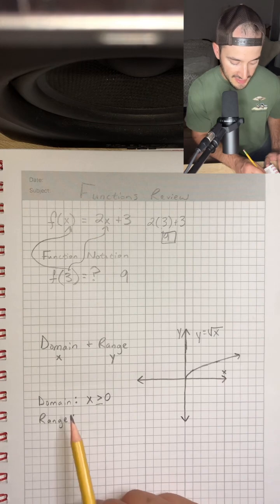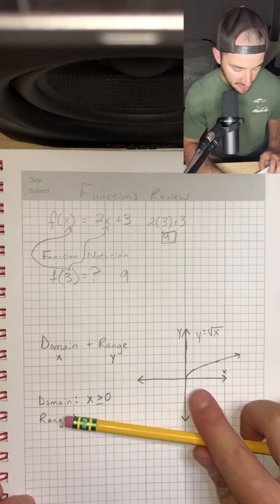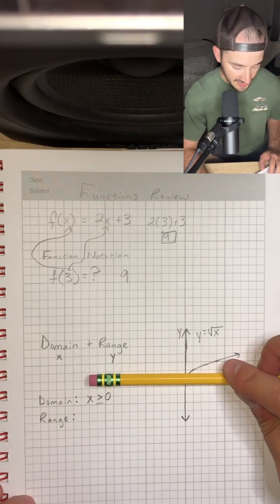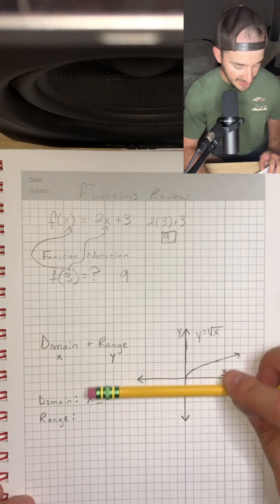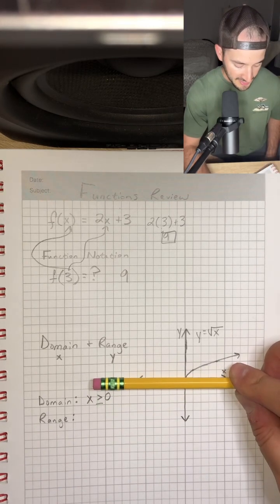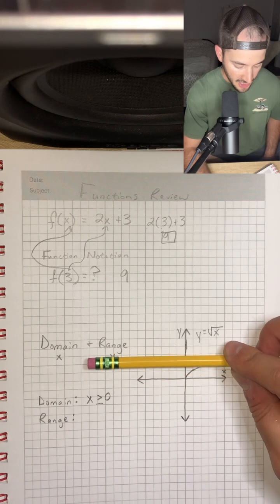Now, the range, same thing, but we're going to look up and down. And so now I see that, once again, it doesn't go below the x-axis or y equals 0, but it does continue up and it gets a little bit higher.